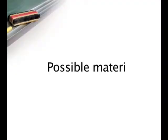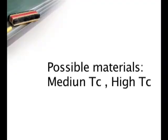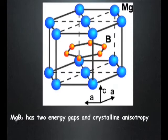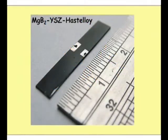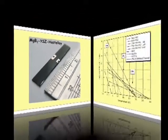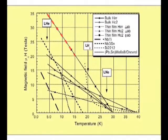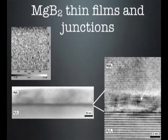The other material that has been discussed is magnesium diboride. The 40 Kelvin transition is appealing — if you could make circuits and junctions and operate them at 20 Kelvin, that would be nice — but we're not there yet.